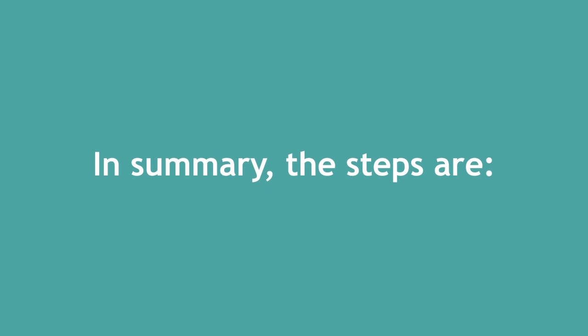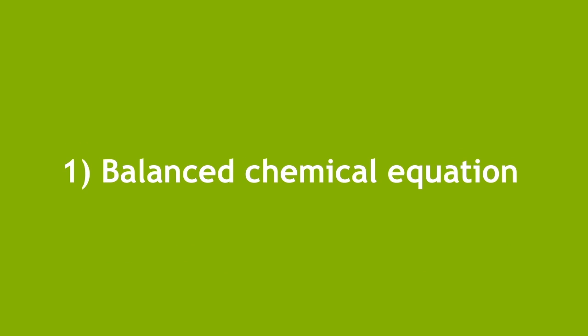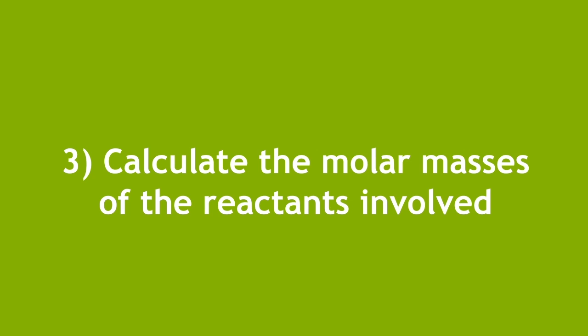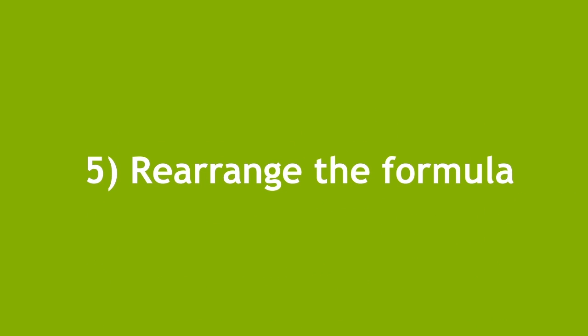In summary, the steps are: 1. Have a balanced chemical equation. 2. Work out the ratio of reactants and products involved. 3. Calculate the molar masses of the reactants involved. 4. Set up the formula to calculate the unknown mass of reactants or product. 5. Rearrange the formula.